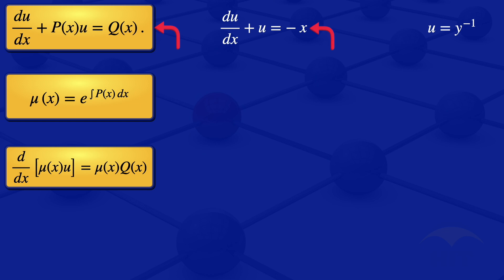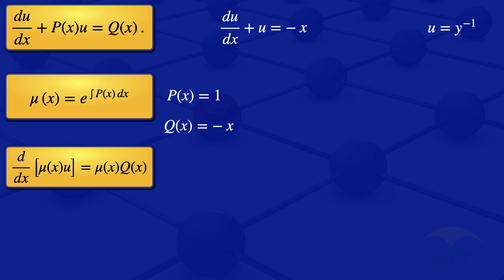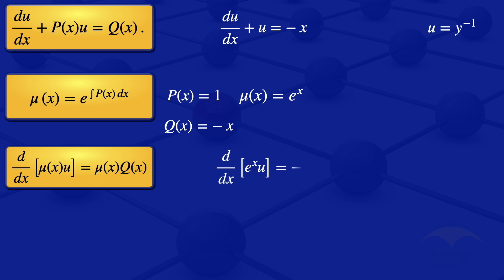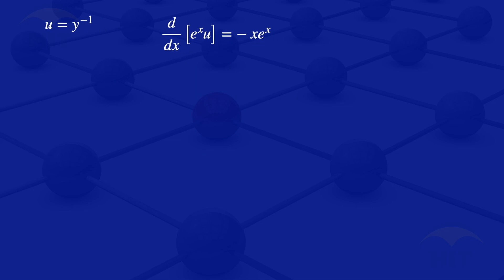By comparison, p(x) equals 1 and q(x) equals minus x. Using this p, the integrating factor is the exponent of the integral of 1, and the integral of 1 is x, so μ(x) equals e^x. Substituting μ and q into our equation, we have d/dx[e^x · u] equals minus x times e^x.